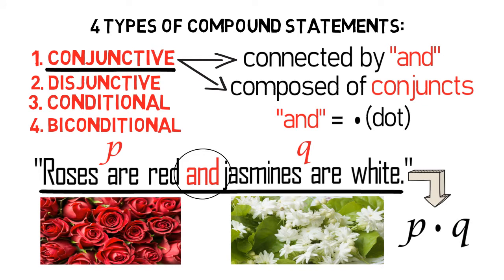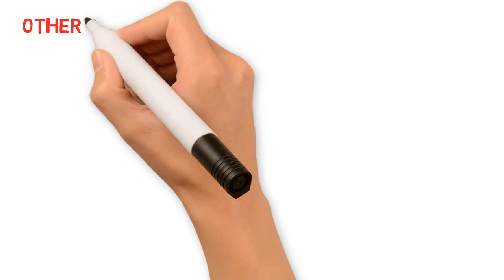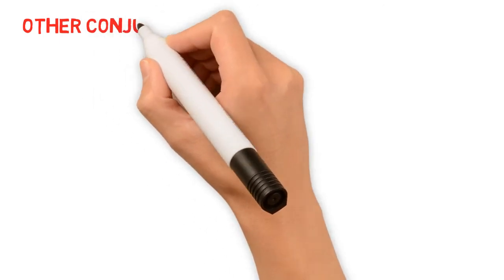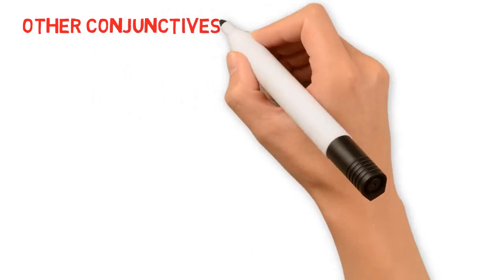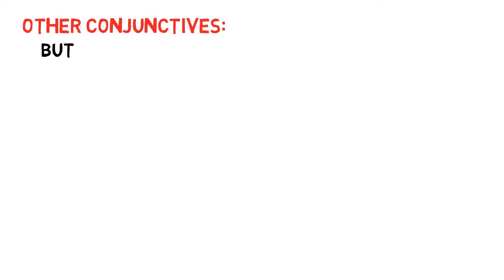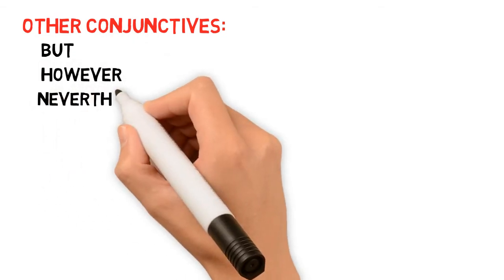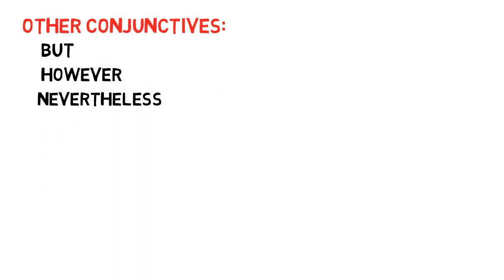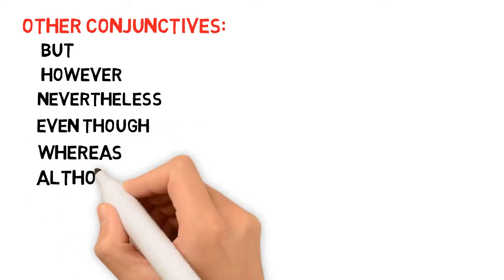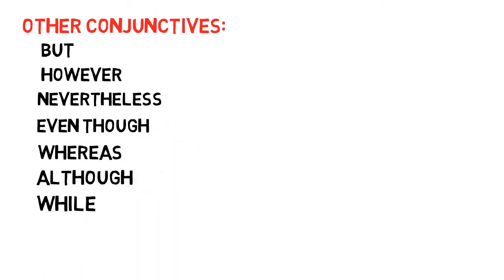Now, in some cases, a conjunctive statement does not use the word 'and' as a connective. Sometimes the following words are used as connectives of a conjunctive statement: but, however, nevertheless, even though, whereas, although, while, still, or yet.